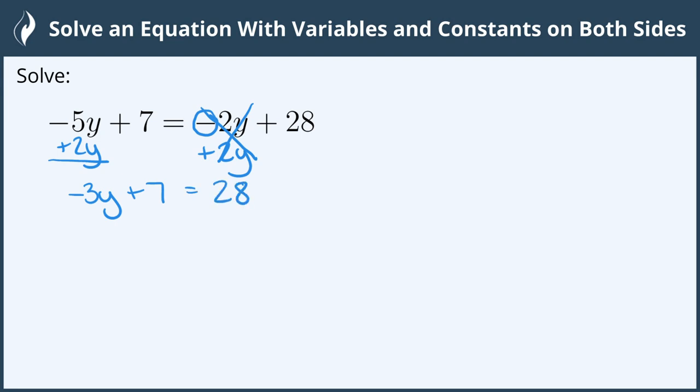We need to continue isolating the variable, so we will move the constant of 7 to the other side of the equation. This is a positive 7 or a plus 7, and the opposite to negate that will be to subtract 7 from both sides. Positive 7 minus 7 cancels. And on the right hand side, 28 minus 7 gives us 21.